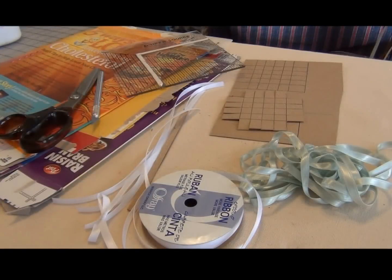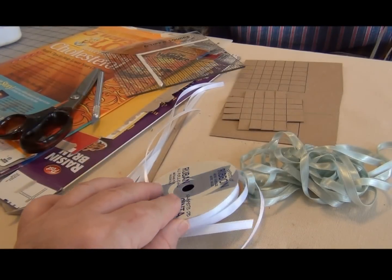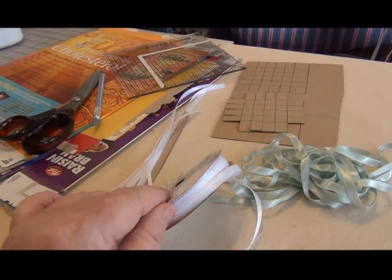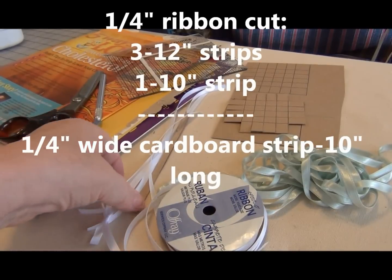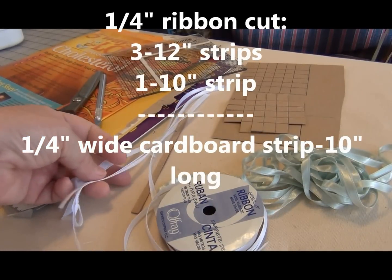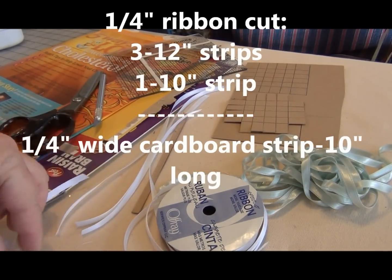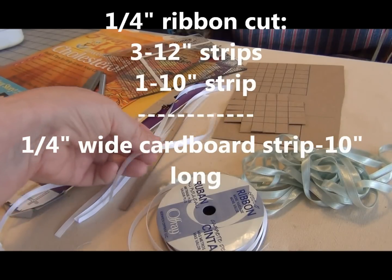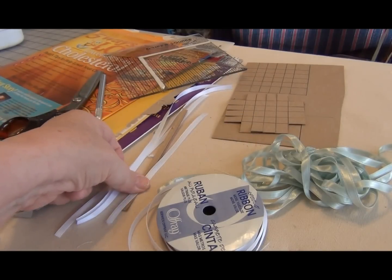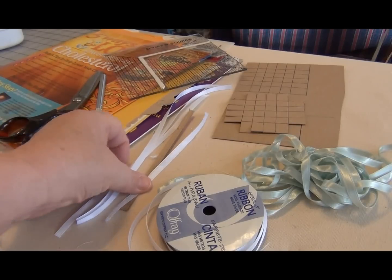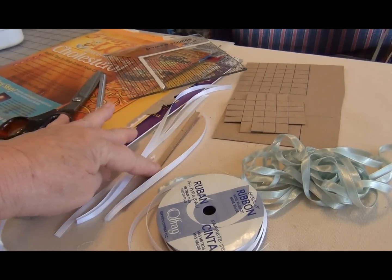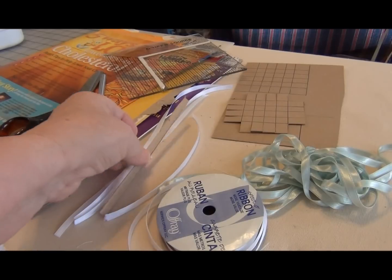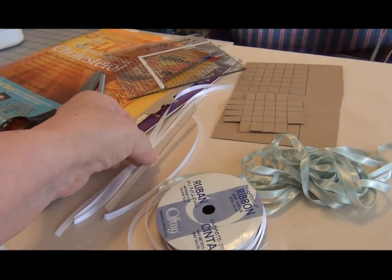For the basket, you will need quarter-inch satin ribbons. From that, you're going to cut three pieces 12 inches long for the weaving, one 10 inches long for the handle, a piece of cardboard for the handle cut a quarter-inch wide and 10 inches long.